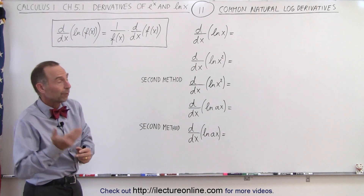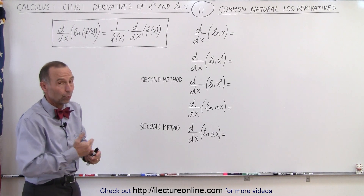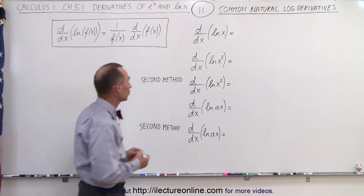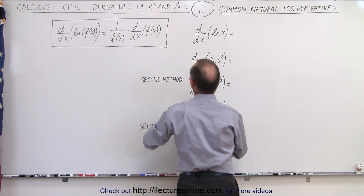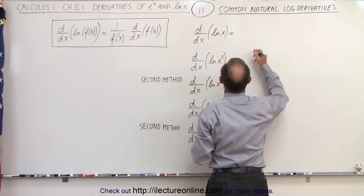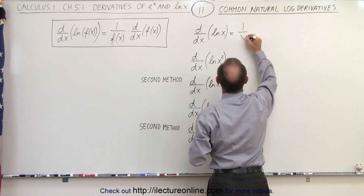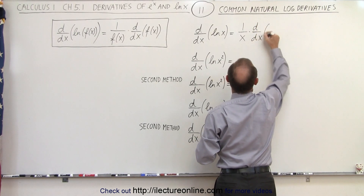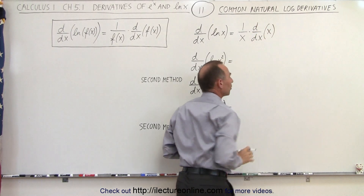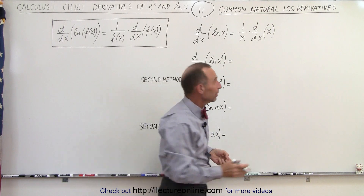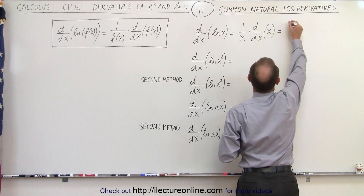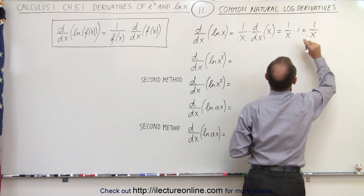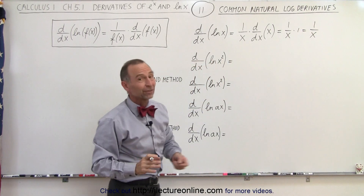We already know that the derivative of the natural log of x is equal to 1 over x. But let's use this technique to see if we get the same result. This is equal to 1 over x times the d/dx of x. The d/dx of x is simply 1, so this becomes 1 over x times 1, which is 1 over x.